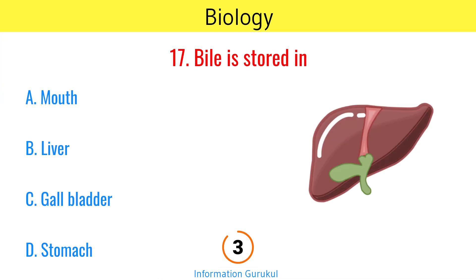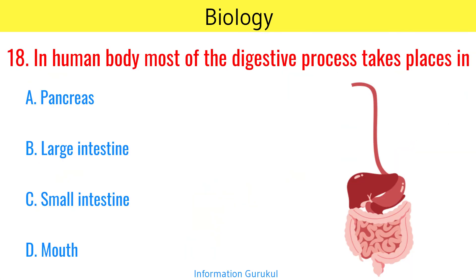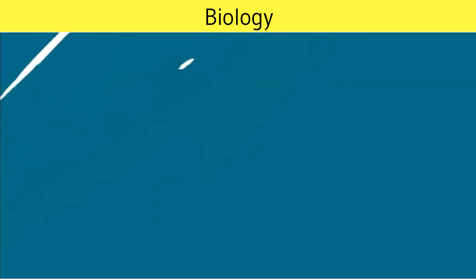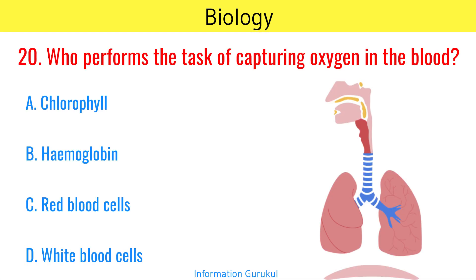Bile is stored in the Gallbladder. In the human body, most of the digestive process takes place in the Small intestine. Which is the harmful effect of carbon monoxide on human breathing? It reduces the effective transport of oxygen. Who performs the task of capturing oxygen in the blood? Hemoglobin.